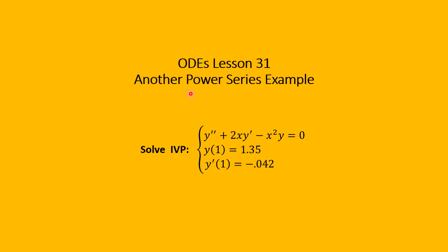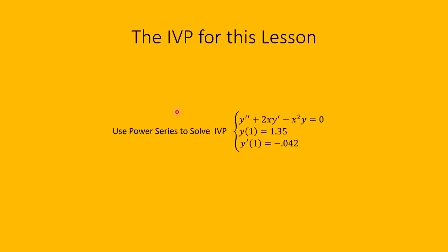Welcome to Ordinary Differential Equations Lesson 31: Another Power Series Example. This example is similar to the previous lesson, except instead of having initial values of y at x equals 0, we have the value of y when x equals 1 and the value of y prime when x equals 1. We're going to solve this initial value problem with initial conditions y(1) = 1.35 and y'(1) = -0.042.